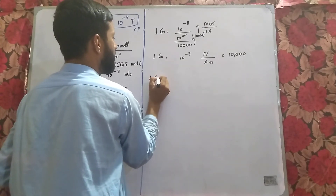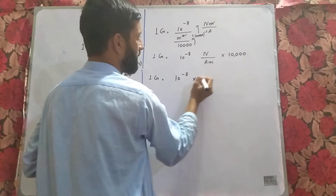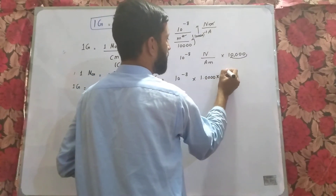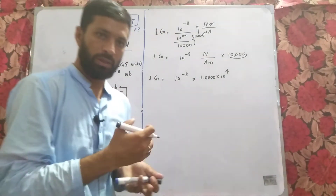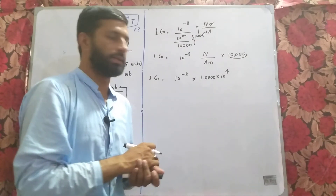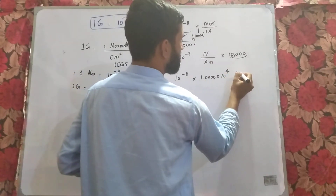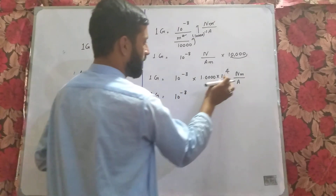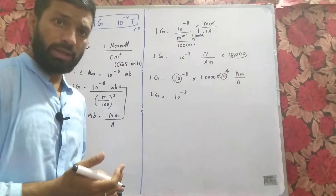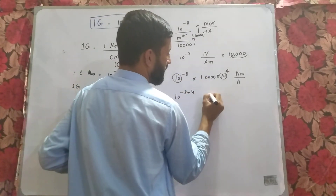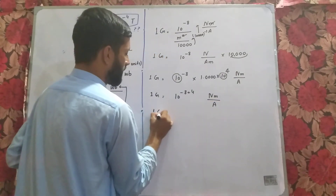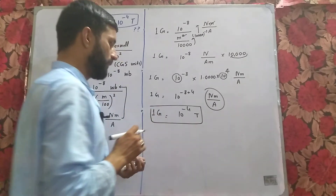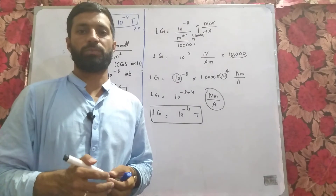Now converting the 100 squared into a power of 10: 100 squared is 10 raised to power 4. Shifting this, we get 10 raised to power minus 8 multiplied by 10 raised to power 4. Adding the powers, minus 8 plus 4 gives 10 raised to power minus 4. Newton per ampere per meter is basically Tesla, so we have proved that one Gauss equals 10 raised to power minus 4 Tesla.